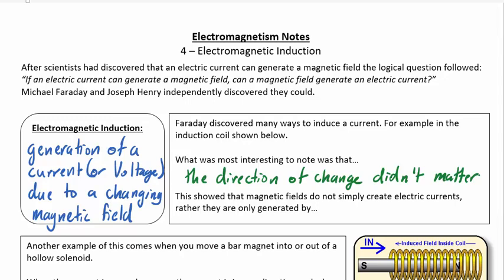And so this shows that magnetic fields do not create electric currents on their own. Rather, they're only generated by changes in the magnetic field.